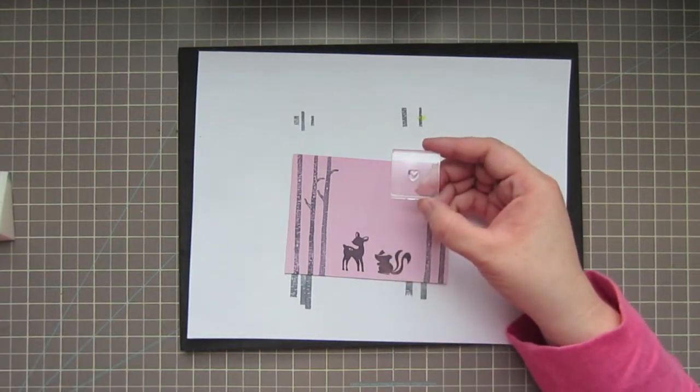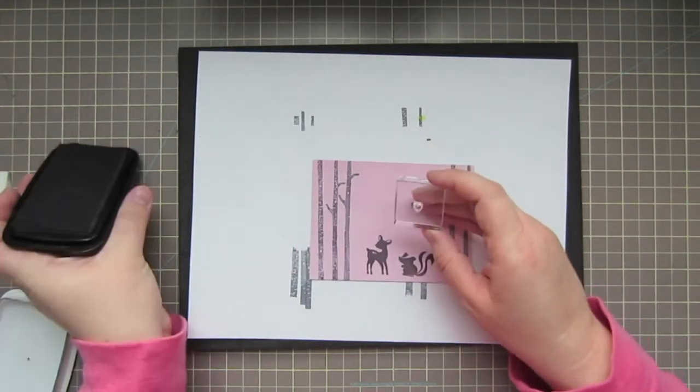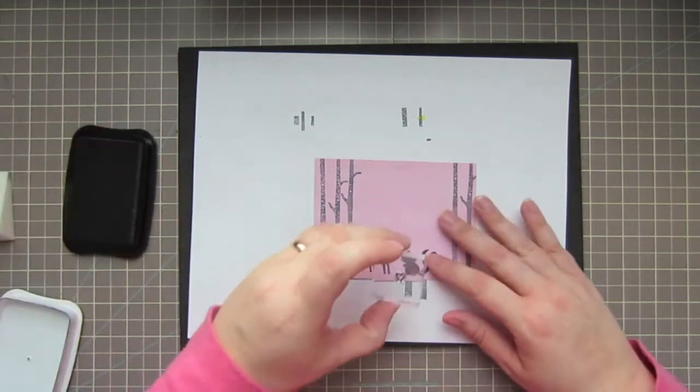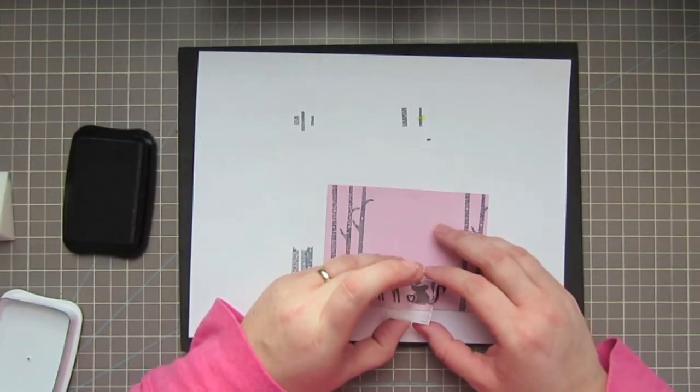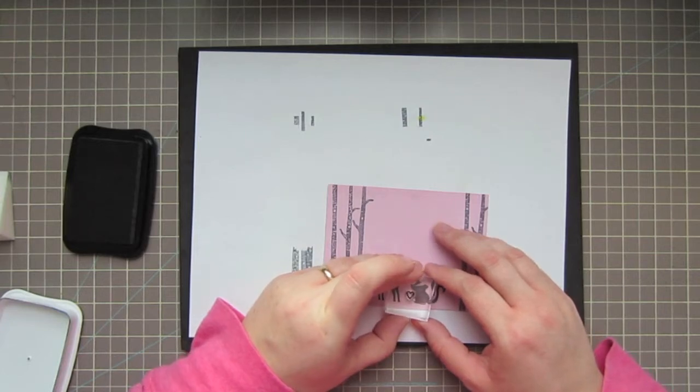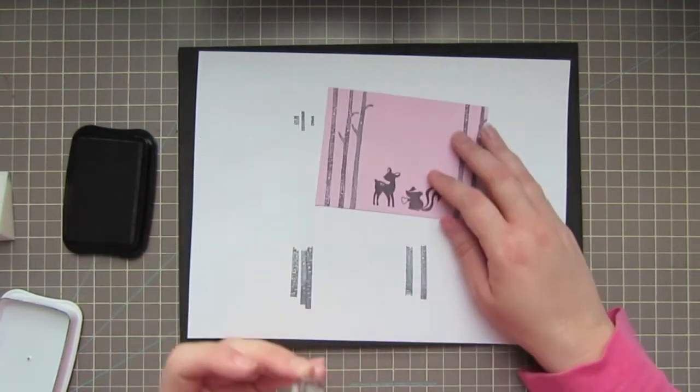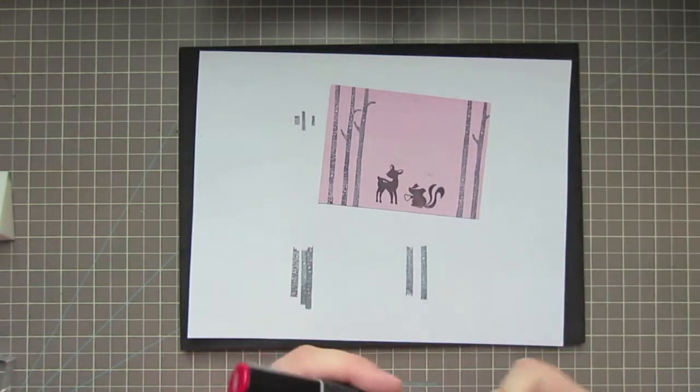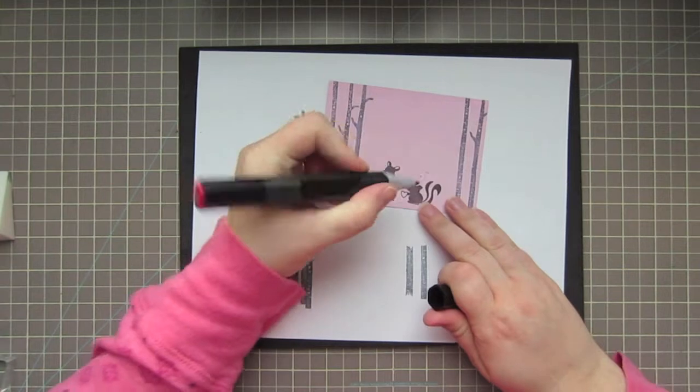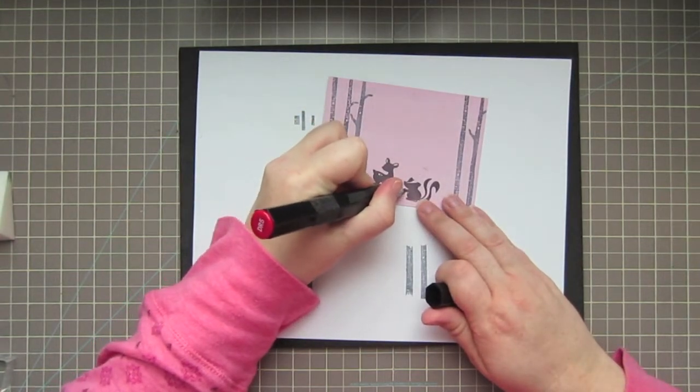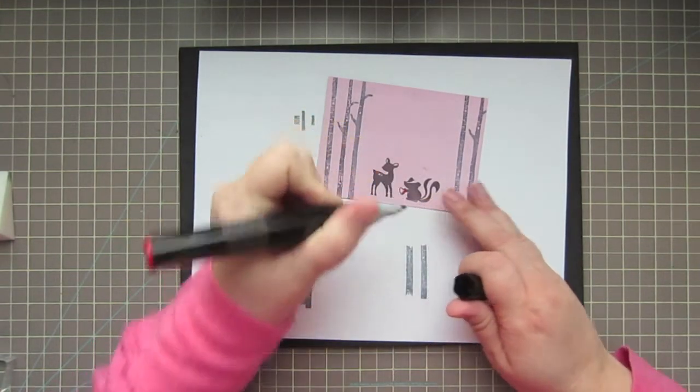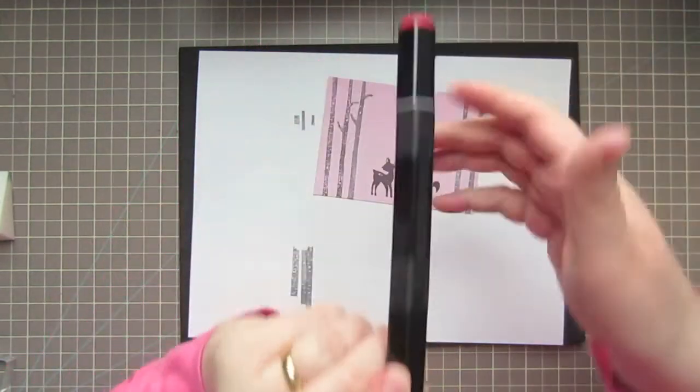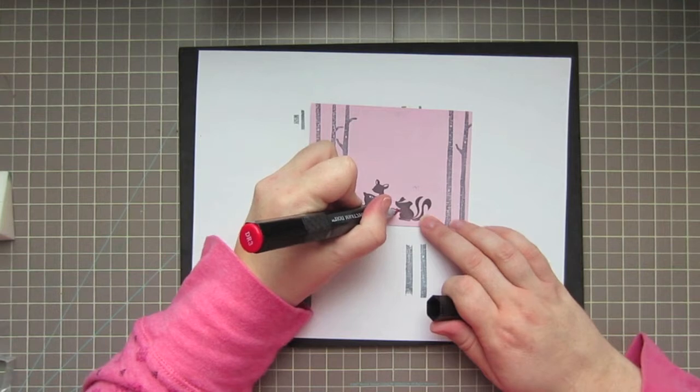Now I have this tiny heart image from the Tree Friends set. I'm going to ink that up in some Tuxedo Black Memento ink and try to place that in Flower's hand just like that. Then I'll take a DR5 and a DR3 Spectrum Noir marker and just color that little heart in.